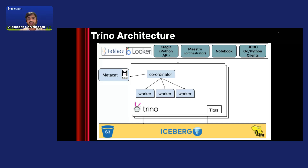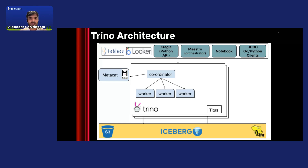We have plans to move to the Iceberg REST catalog very soon. All data are stored as Iceberg tables in S3. Apart from the Iceberg Connector, we support Hive, Druid, MySQL, and Postgres connectors too. Parquet is our most popular choice for data files; other than that we also have data files in Avro format.